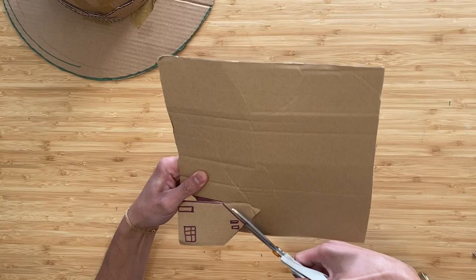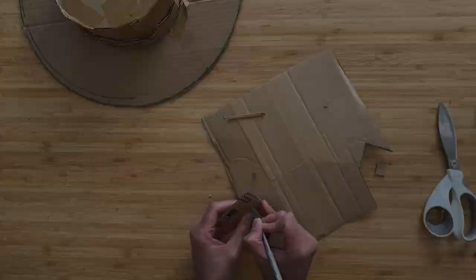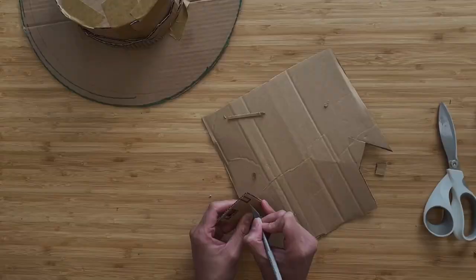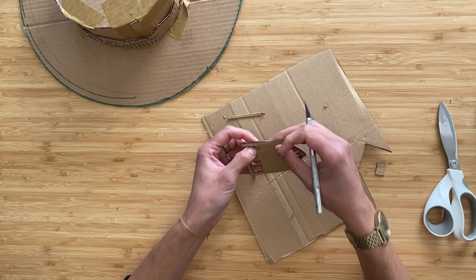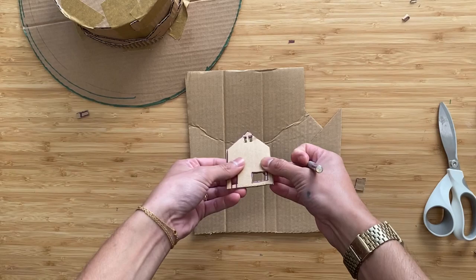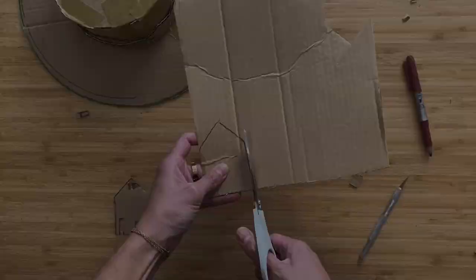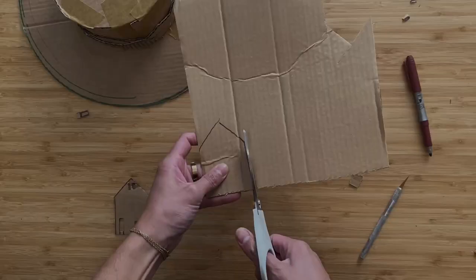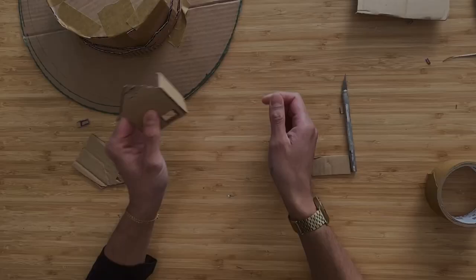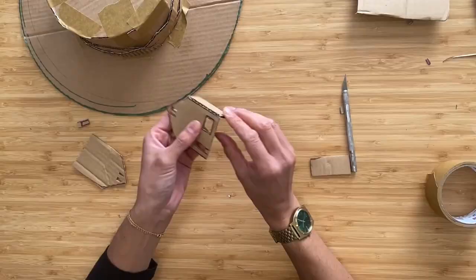What I'm doing now is I'm going to cut out the windows and the door using an exacto knife. And then I'm going to create the back part of this house by tracing it and then cutting it out. Remember that you don't have to cut out the windows and the doors. If you just want to draw them on with pen or marker or pencil, that's up to you.